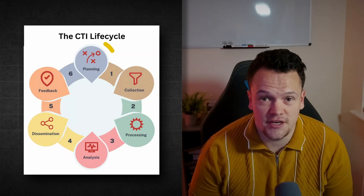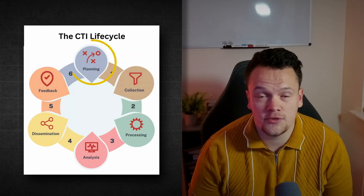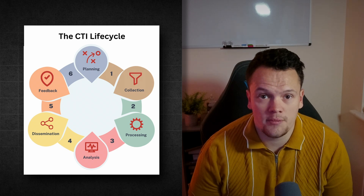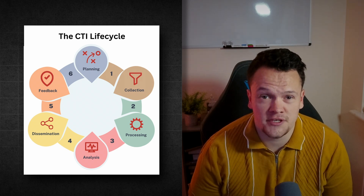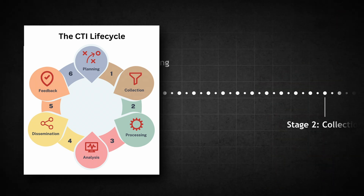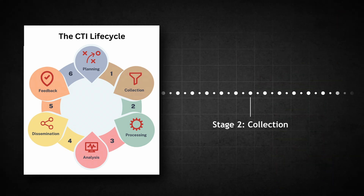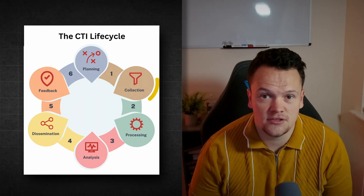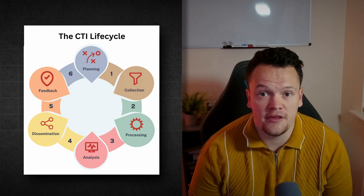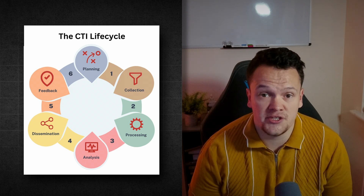Stage one is the planning stage. Here you will define the goals and objectives of your CTI collection, such as your intelligence requirements, what assets you want to prioritize defending, and how you will communicate the intelligence you find. Once you have a plan, you can move on to stage two — collection. This involves going out and collecting threat intelligence relevant to your goals and objectives. This could be open source intelligence, intelligence from proprietary threat vendor feeds, or engaging with information sharing communities.